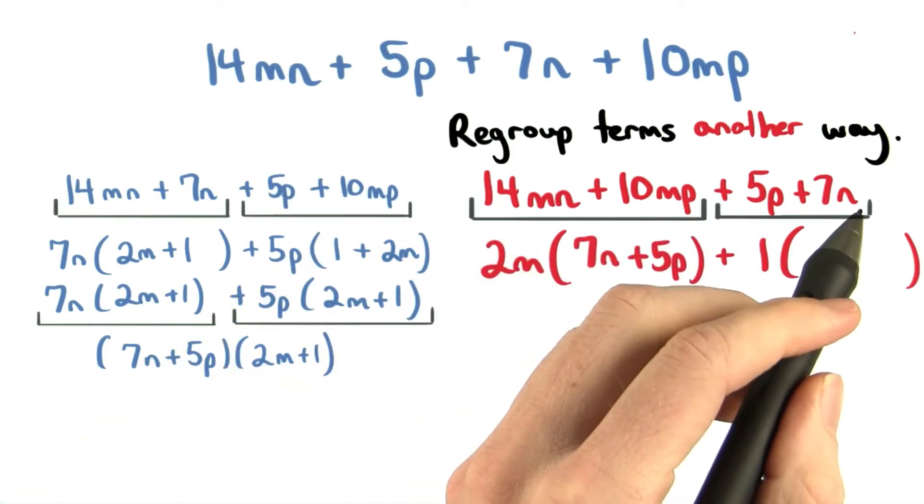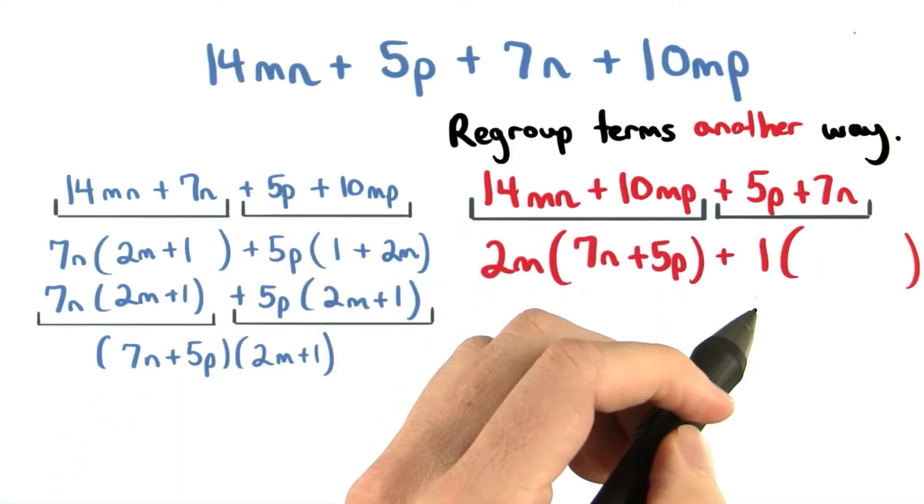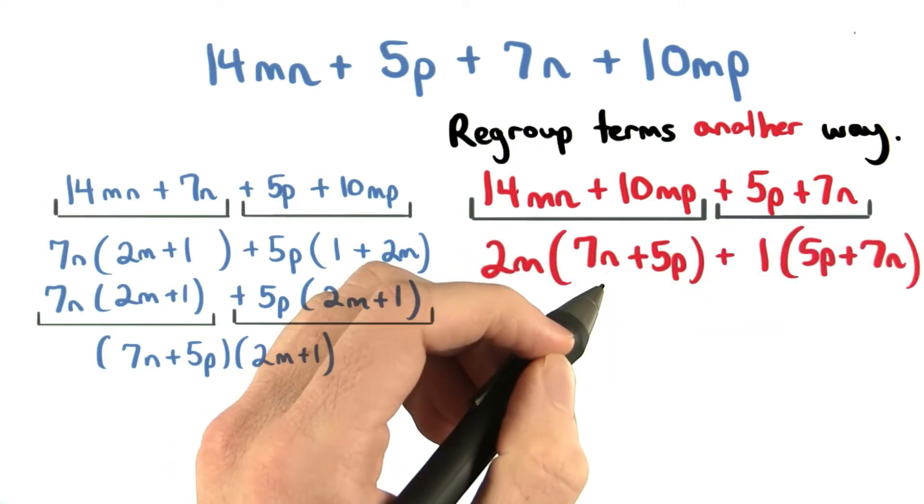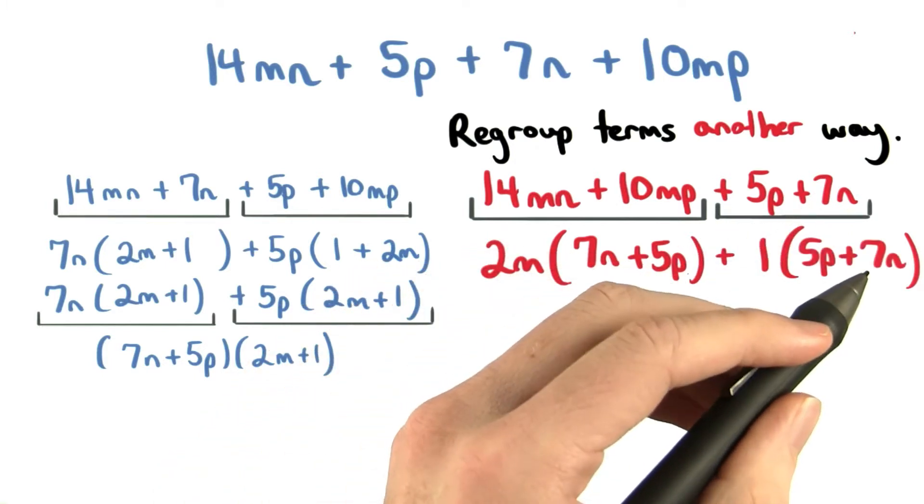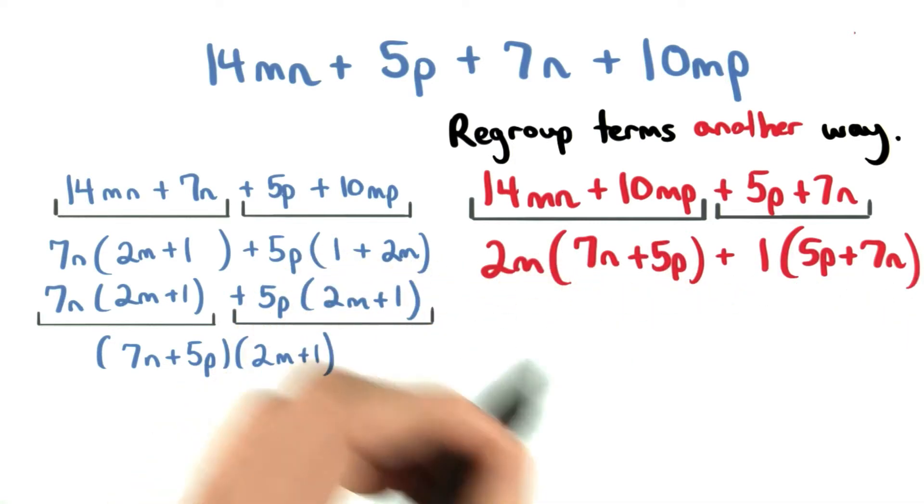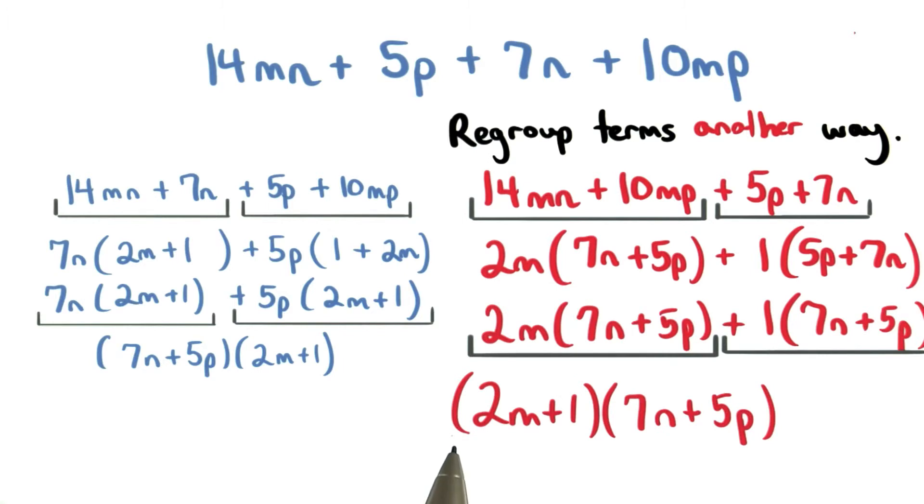Now in this last group of terms, there's only a greatest common factor of 1. They don't share any variable factors or number factors. Notice that I have 7n plus 5p and 7n plus 5p in these two parentheses. This is the next common factor. So our two factors are 2m plus 1 and 7n plus 5p.